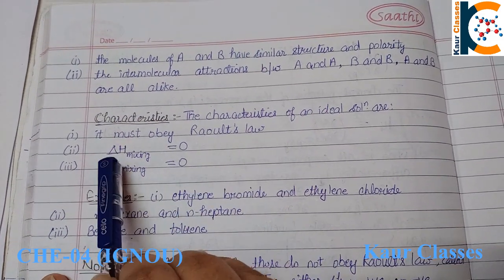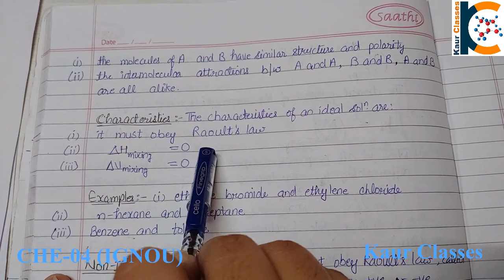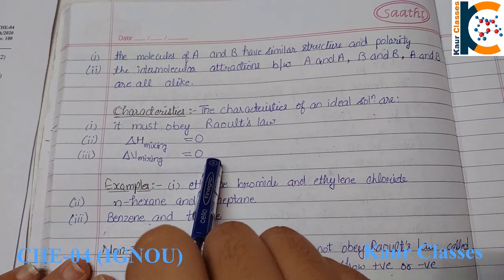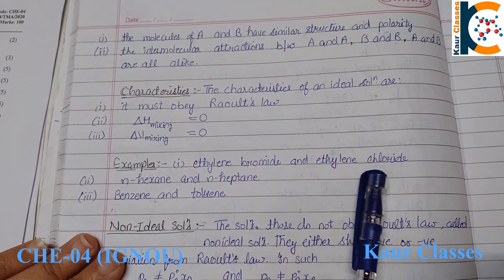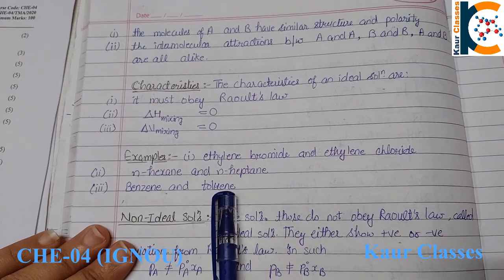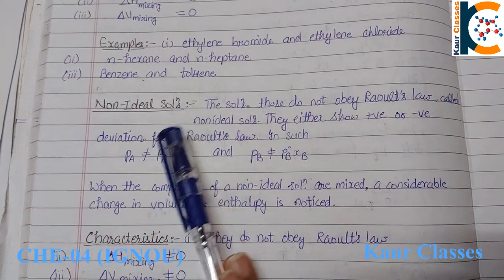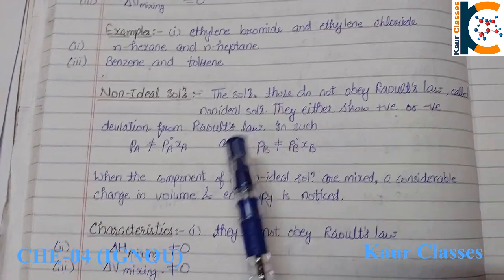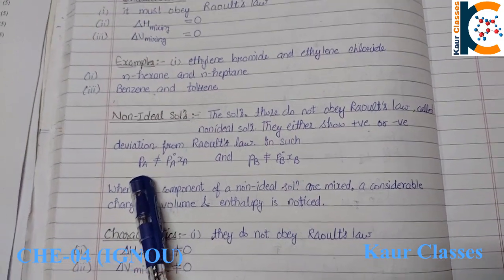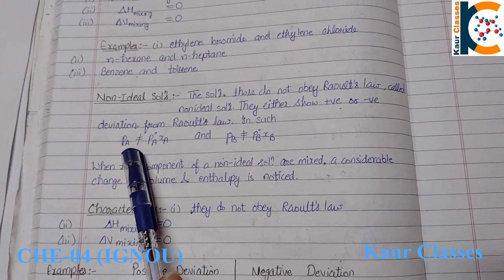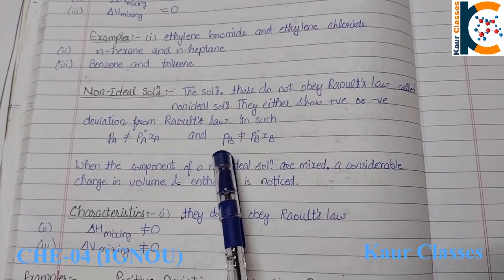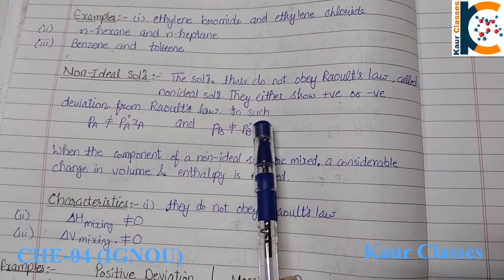Characteristics of an ideal solution: it obeys Raoult's law, the change in enthalpy on mixing is zero, and the change in volume on mixing is zero. Examples include ethylene bromide and ethylene chloride, n-hexane and heptane, and benzene and toluene. A non-ideal solution does not obey Raoult's law — it shows either positive or negative deviation, where the partial pressure of each component is not equal to that of the pure component.